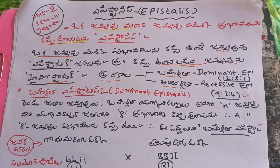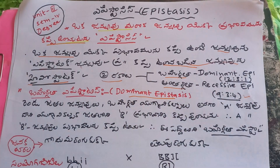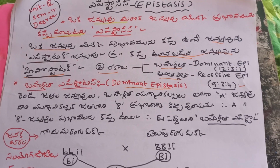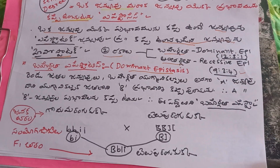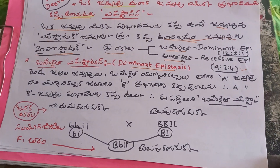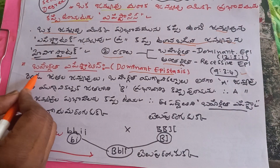Bahirgath epistasis, also known as dominant epistasis, gives a 12:3:1 ratio.